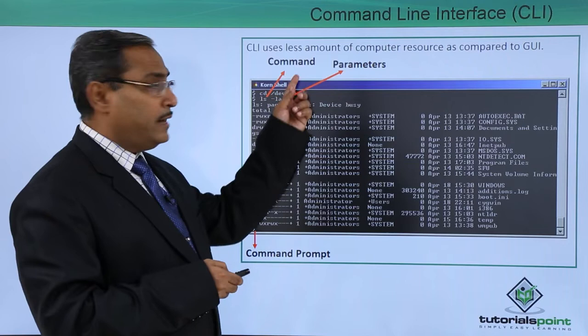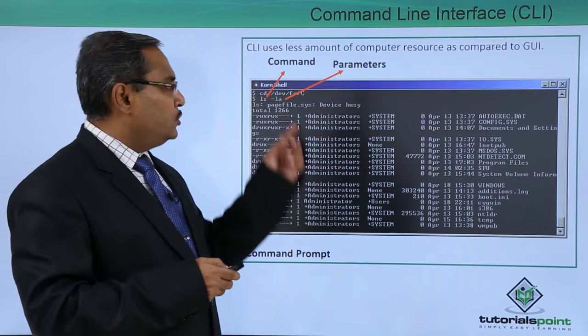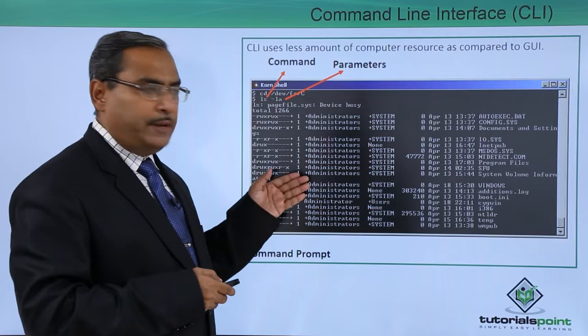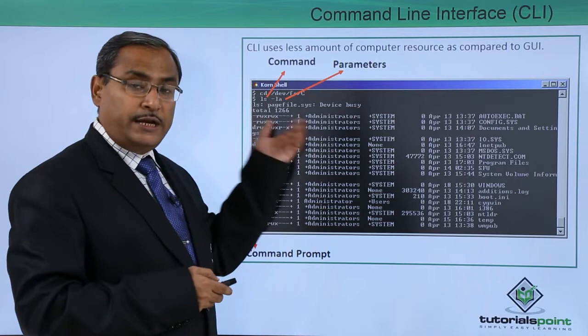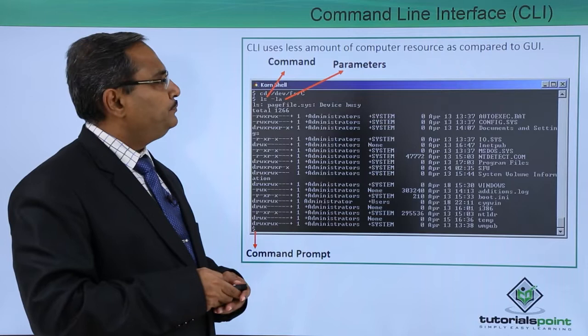The command is LS minus LA. With this command, all files will be displayed including hidden ones, and L denotes the long list format. These are known as parameters passed with the LS command. The respective outputs appear on the same screen where the commands are executed, with multiple columns in the output. This console example has been placed on screen for illustration.